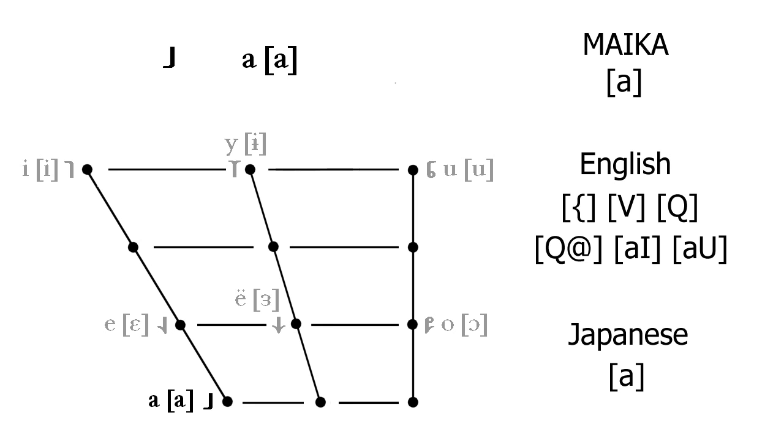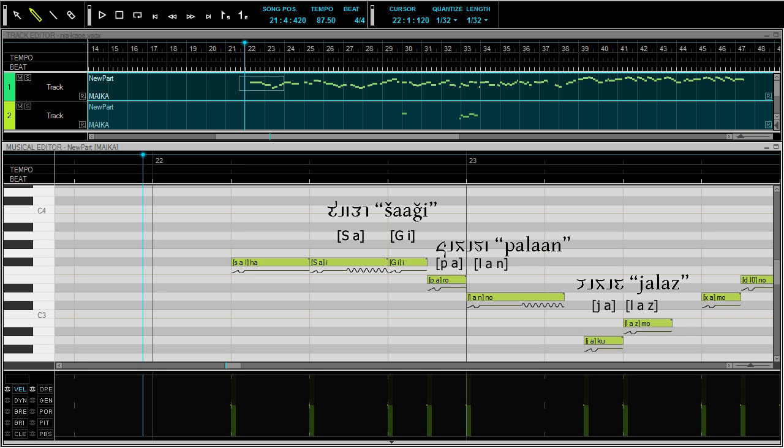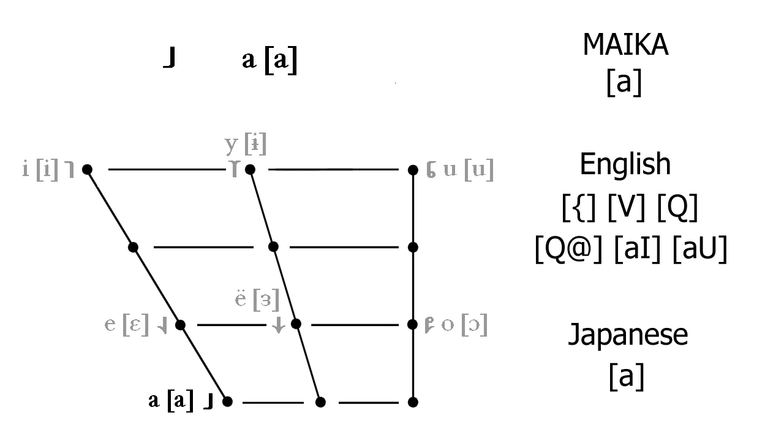Sometimes you might have better results with A. One problem with the English Vocaloids is that they don't have an A phoneme and this is one of the most common sounds in Tirulat. Fortunately, it's easy with Maika. Just use A. For the English Vocaloids, there are three basic options. If one of these doesn't work, try another one. The first is A.